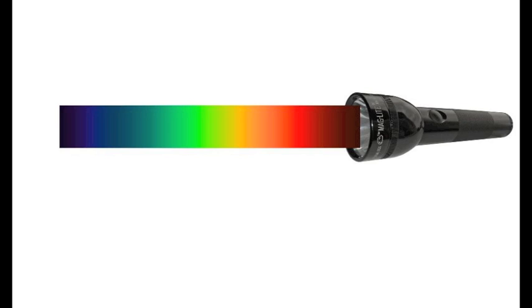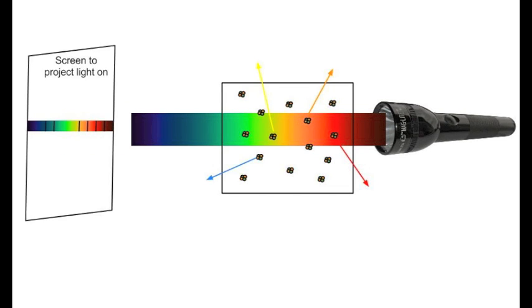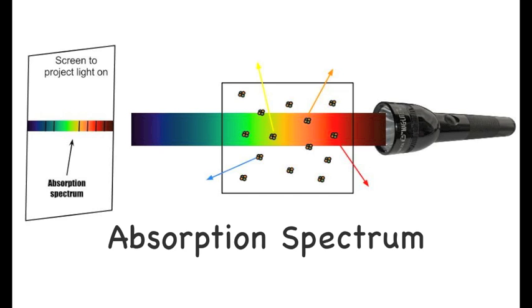If you were to shine light consisting of all possible wavelengths through a gas composed of our pretend atoms, not all wavelengths would make it through. Some wavelengths would get absorbed, then scattered away in random directions. This would manifest as dark lines in the spectrum — missing wavelengths corresponding to the energies of photons that the electron can absorb. This is like a fingerprint for an atom, and it's called the atom's absorption spectrum. If you were to ever see this progression of dark lines in these exact positions, you would know the gas contains our hypothetical atom.